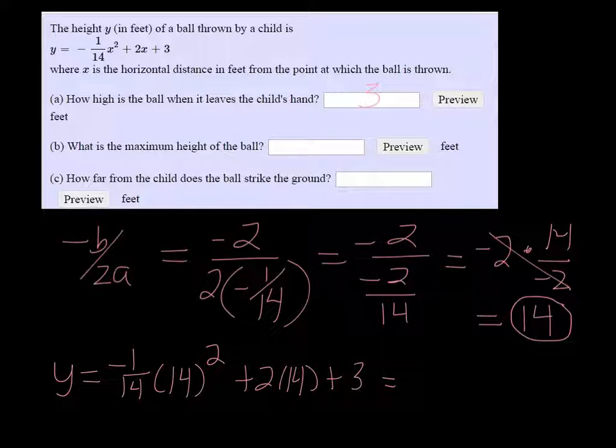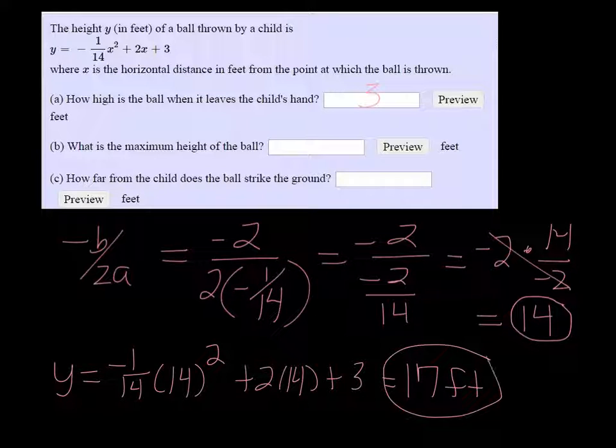So let's put that all in the calculator. Negative 1 over 14 times 14 squared plus 2 times 14 plus 3 is 17. So the height was 17 feet, maximum height that is. Let's put 17 here.